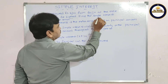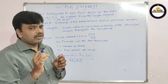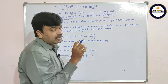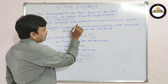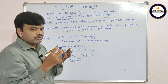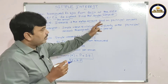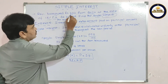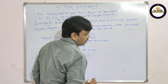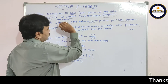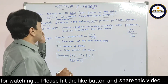Before going to simple interest, what is the meaning of interest? Interest is the extra amount paid on the principal amount. The principal amount here is rupees 200. Now if Ravi repays Srinu 220 rupees, the initial principal was 200, so 220 minus 200 equals 20 rupees. This 20 rupees is called interest.